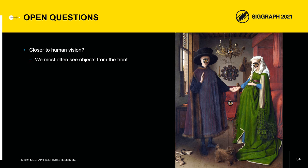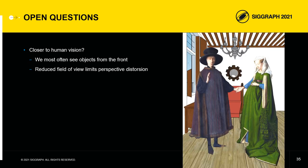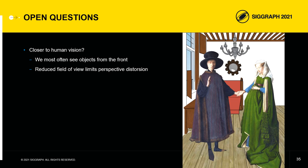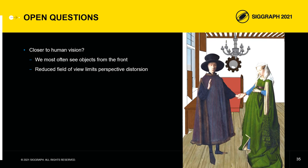Moreover, by reducing the field of view to horizontal strips, Van Eyck avoided large perspective distortions. We see, for example, how the ceiling goes up between the lowest viewpoint and the highest one finally kept by Van Eyck.